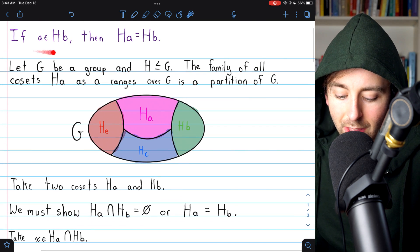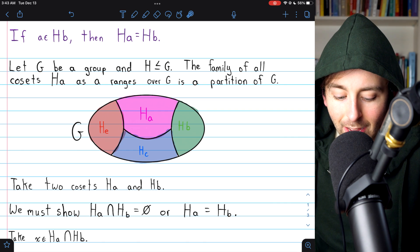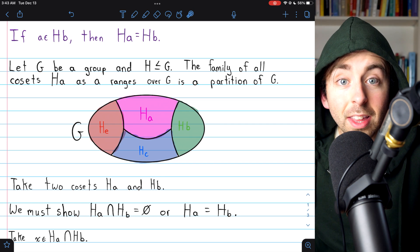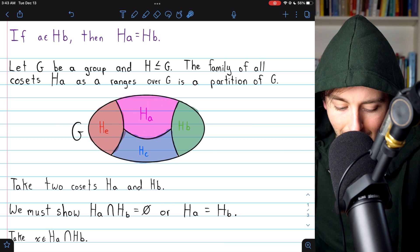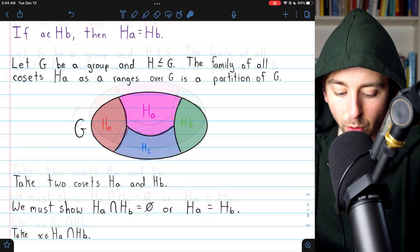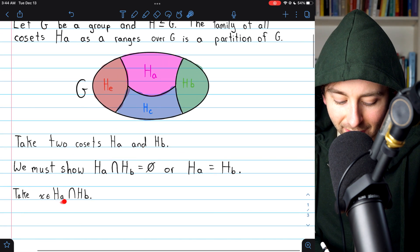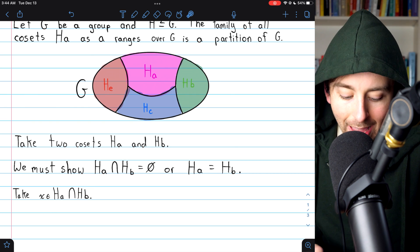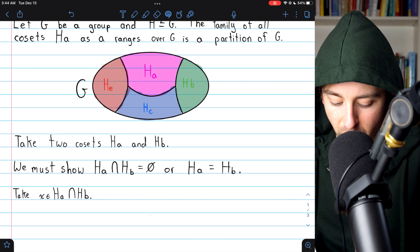we will use this result that we proved in my lesson introducing cosets. This result says that if A is an element of the coset Hb, then in fact Ha is equal to Hb, and we will use that here. And the way we'll use this result is by showing that this A is in fact an element of Hb, and we're going to use this common element X in order to do that.